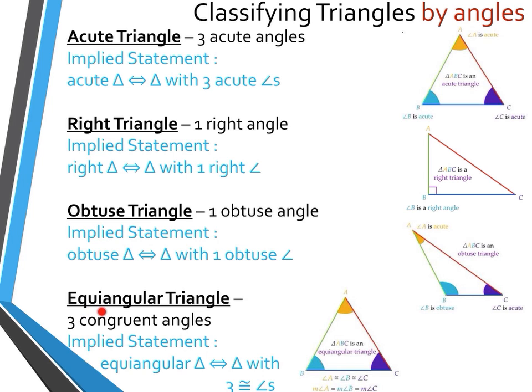Our last classification by angles is the equiangular triangle, which has three congruent angles — all three angles are the same. Since the total interior angle sum is 180 degrees, dividing by three equal angles means each angle is 60 degrees. Implied statement: equiangular triangle implies triangle with three congruent angles.